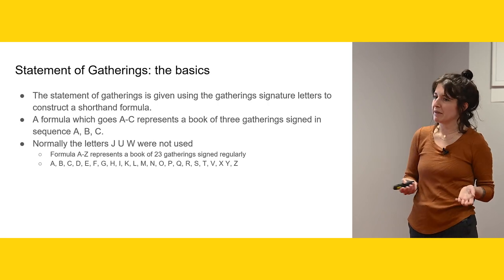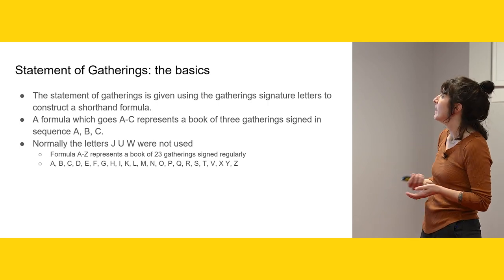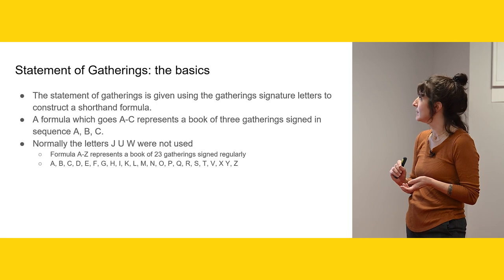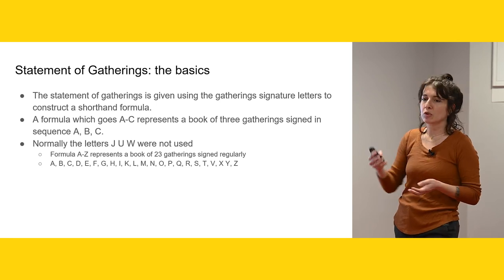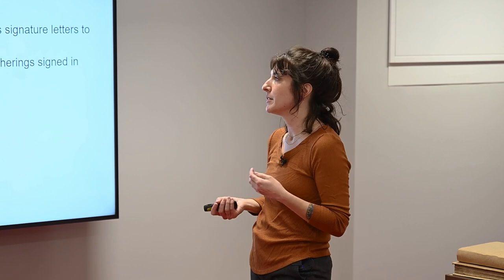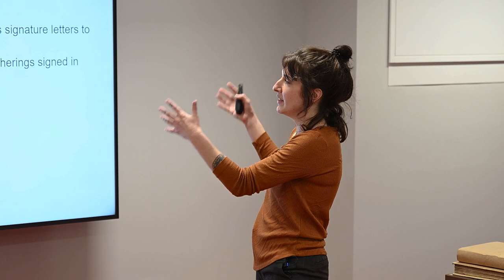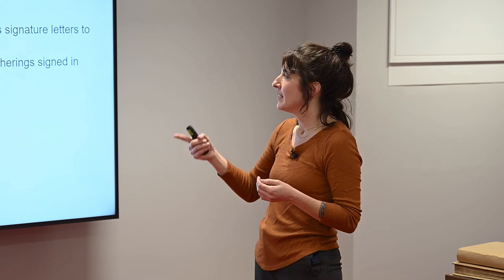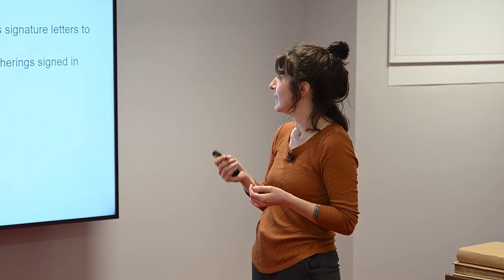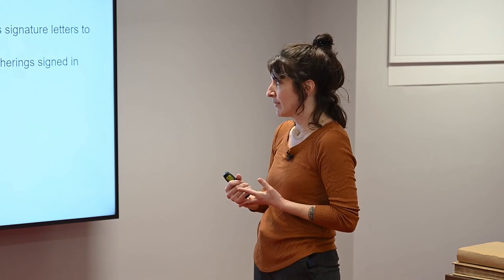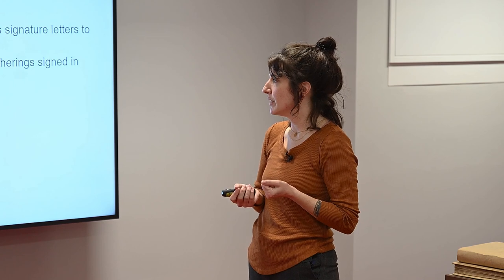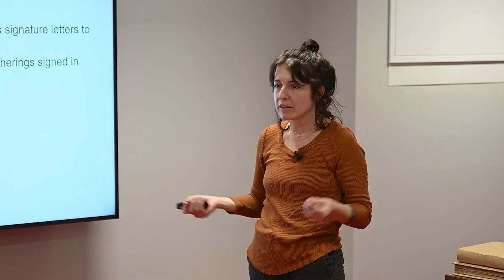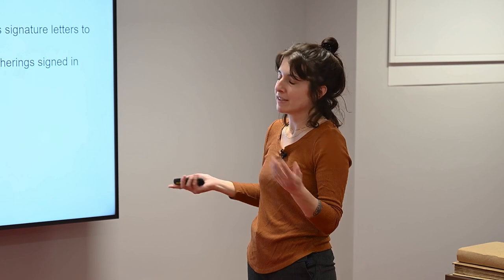First, there's a statement of gatherings — probably the most complicated part. It's given using the signatures that are usually at the bottom of the pages, to construct a shorthand formula that looks like a mathematical formula with letters and numbers. A formula going A through C represents a book of three gatherings signed in sequence A, B, C. The letters J, U, and W were not used. So a formula A through Z represents a book of 23 gatherings signed regularly — meaning consistently throughout — which is actually pretty rare.